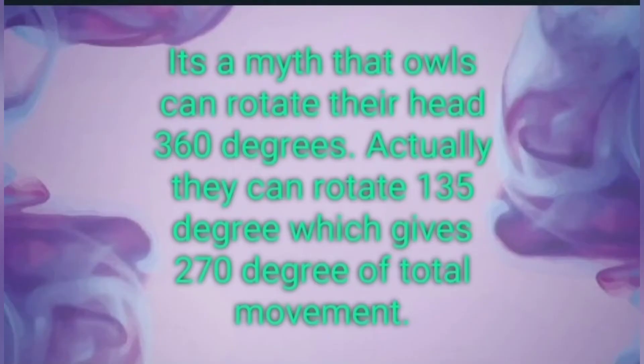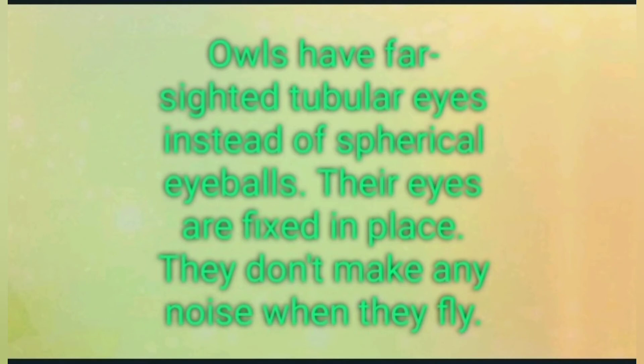It's a myth that owls can rotate their head 360 degrees. Actually, they can rotate 135 degrees, which gives 270 degrees of total movement. Owls have far-sighted tubular eyes instead of spherical eyeballs. Their eyes are fixed in place, and they don't make any noise when they fly.